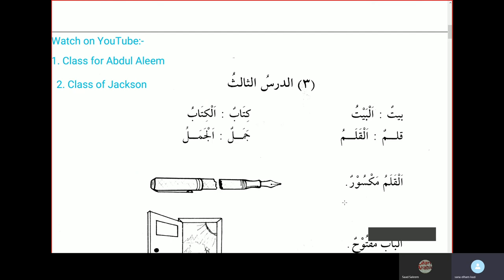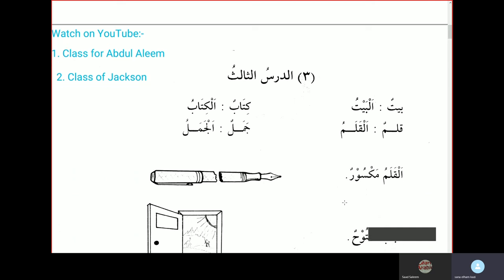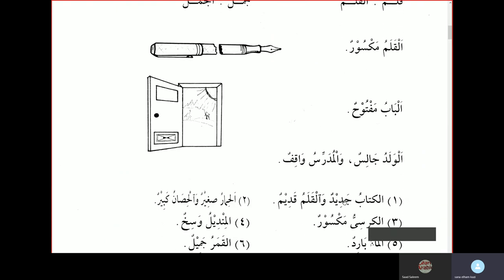Similarly, kitabun, a book, becomes al-kitabu, the book. Kalamun, a pen, becomes al-kalamu, the pen. Jamalun is a camel, al-jamalu, the camel. Al-kalamu maksurun, the pen is broken. Al-babu maftuhun, the door is open. Here even though there is tanwin, maksurun and maftuhun are adjectives, so we are not using the word a. We are not saying a open, but just the door is open.